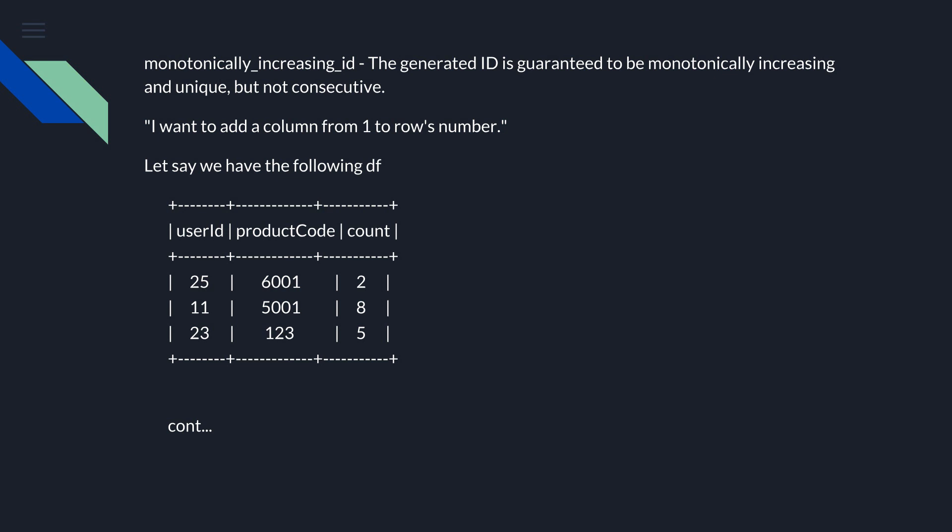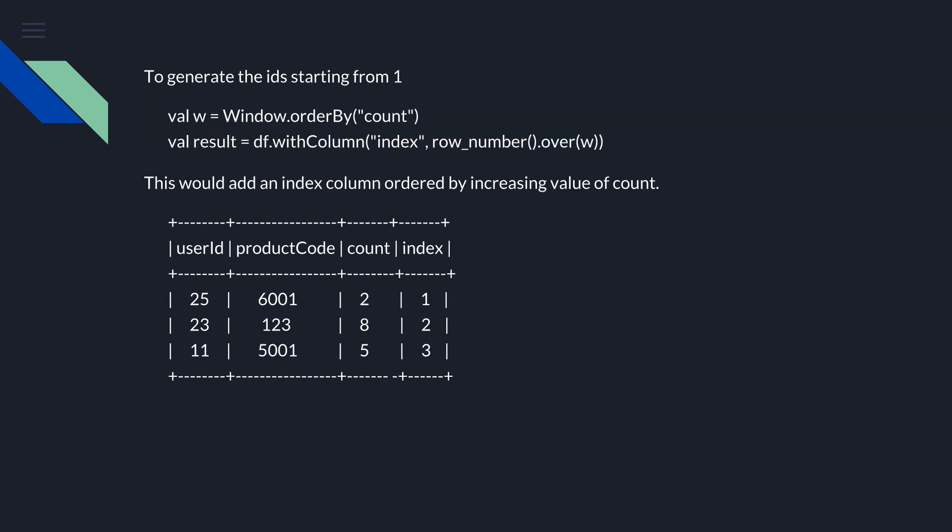The other way we can do this is by using row_number, when we want to increase the index column sequentially. This will help us to achieve the function which we have shown in the video.